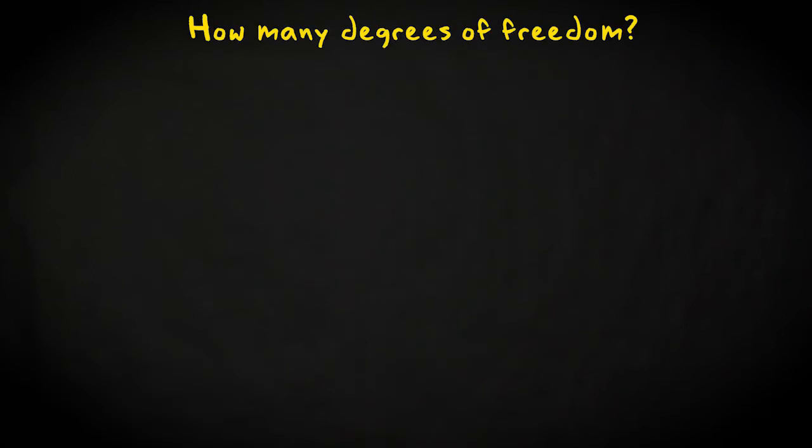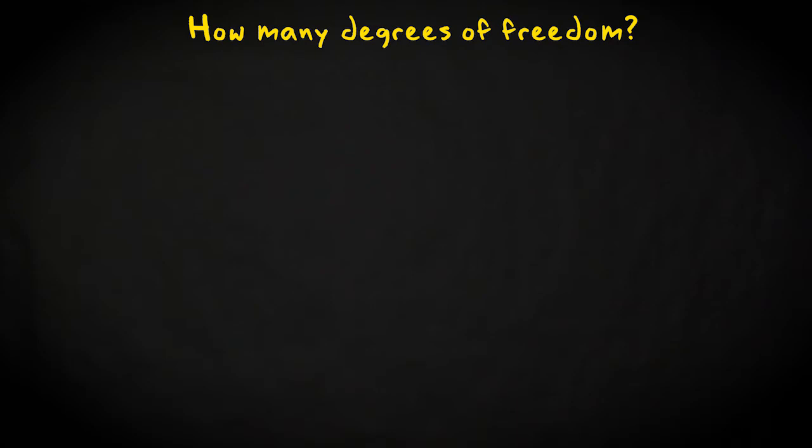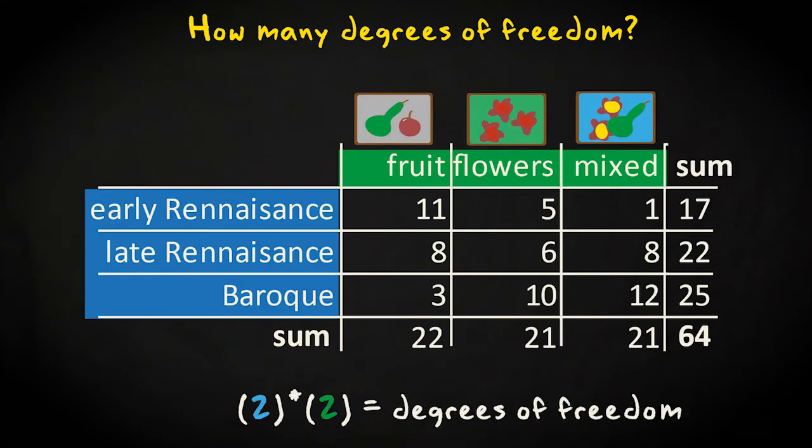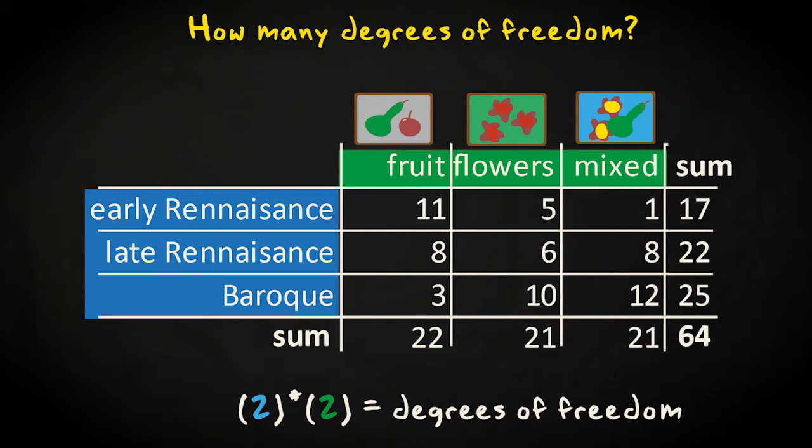So how do we select the right degrees of freedom for our case? In a table with r rows and c columns, there are r minus 1 times c minus 1 degrees of freedom. In our table with 3 rows and 3 columns, r minus 1 is 2 and c minus 1 is 2. So we have 4 degrees of freedom.